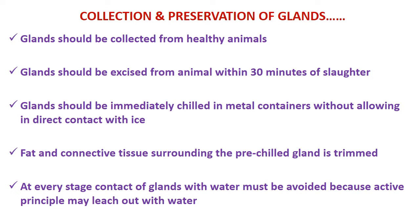Glands should be collected from healthy animals that have undergone ante-mortem and post-mortem inspection. The glands should be excised from the slaughtered animal within 30 minutes of slaughter, because delay causes loss of activity or active principle. The glands should be immediately chilled in metal containers without direct contact with ice — they should be packed separately or individually. Fat and connective tissue surrounding the pre-chilled gland is trimmed and removed. Contact of glands with water must be avoided at every stage because active principles may leach out.